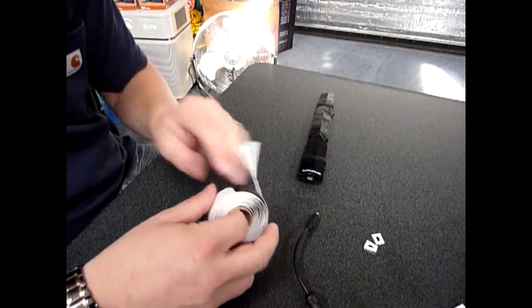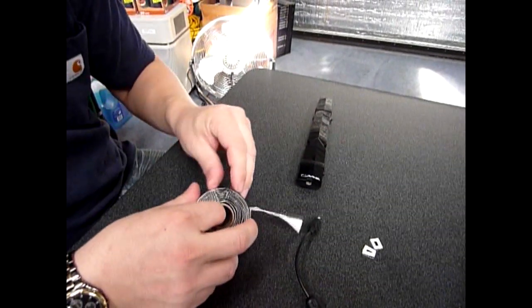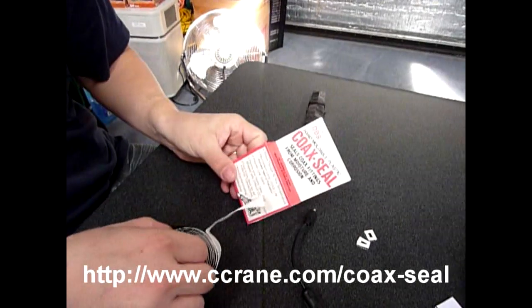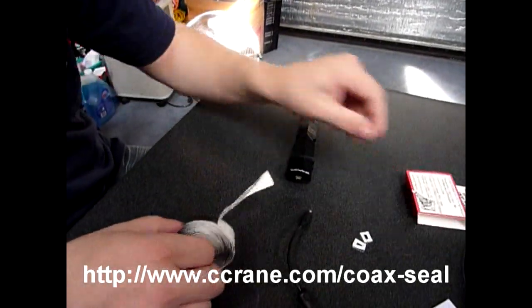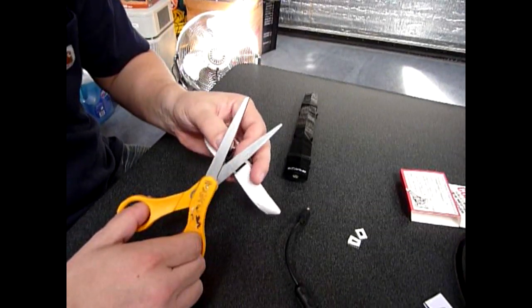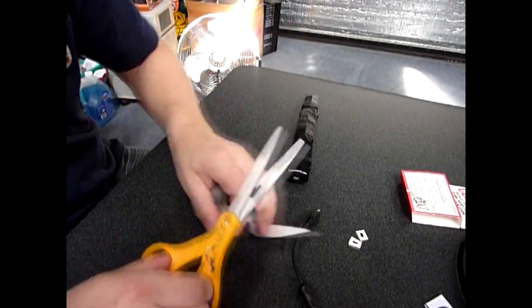But instead of doing that, you can take a little piece of coax seal. You can probably pick some up online from C-Crane Company and you're going to get a little chunk of it.